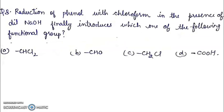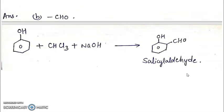Question 8: Reduction of phenol with chloroform in the presence of dilute NaOH introduces which functional group? CHCl2, CHO, CH2Cl, or COOH. So this reaction of phenol, chloroform and NaOH is Reimer-Tiemann reaction, whose product is salicylaldehyde. Answer is B. This is the Reimer-Tiemann reaction.